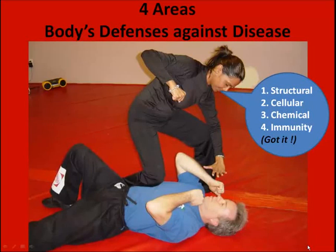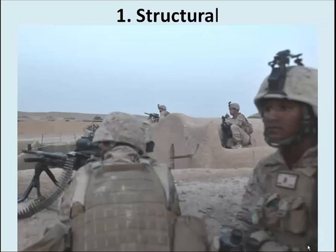There are four areas of the body's defense against disease: structural, cellular, chemical, and immunity. We'll look at each one.